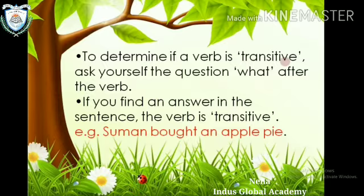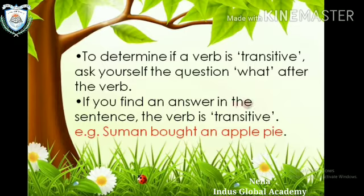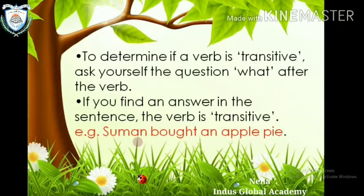To determine if a verb is transitive, ask yourself the question 'what' after the verb. If you find an answer in the sentence, the verb is transitive. For example, 'Suman bought an apple pie' — What did Suman buy? Answer: apple pie. Answer mil gaya, that means yeh transitive hai.